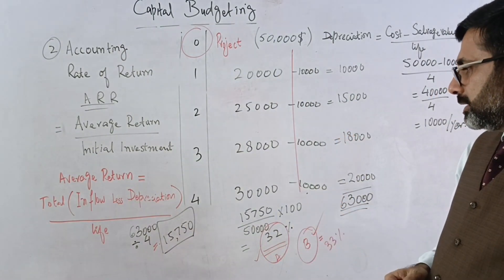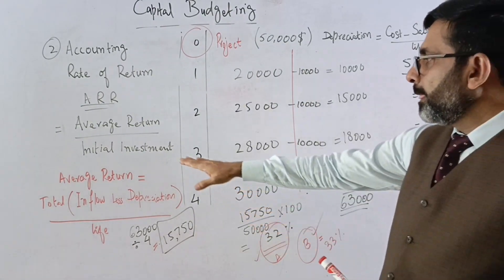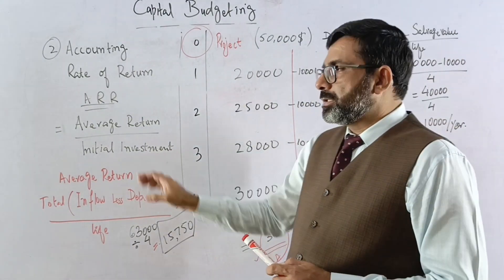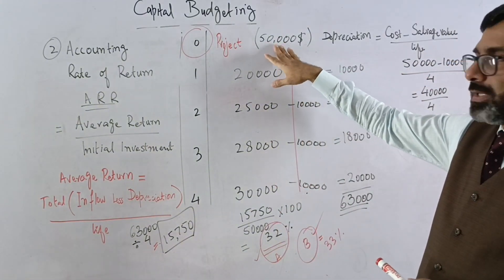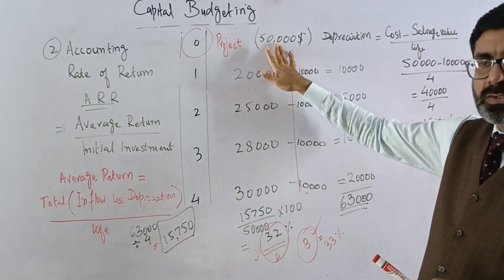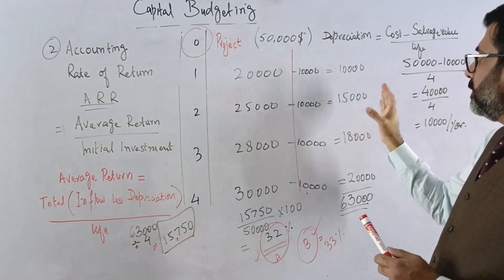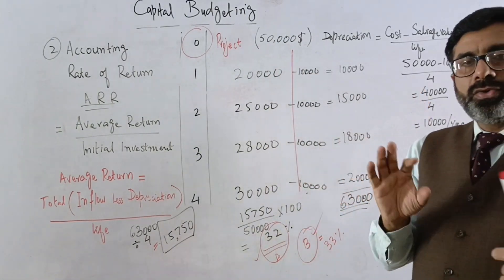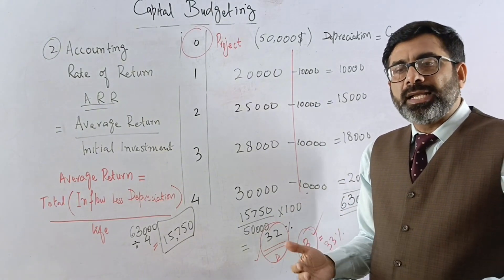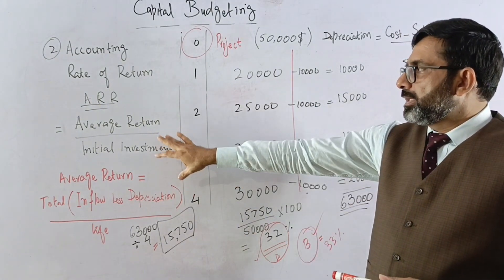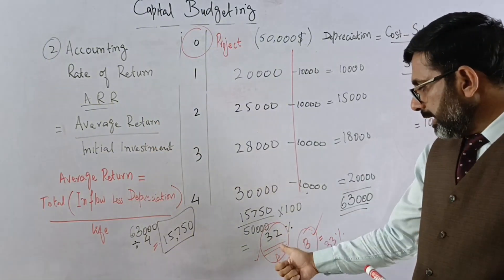In some textbooks, authors use the average investment instead of initial investment. At the start, investment was 50,000, and at the end only the salvage value of 10,000 remains, so the average of these two is used. But most commonly, we use average return divided by the initial investment.